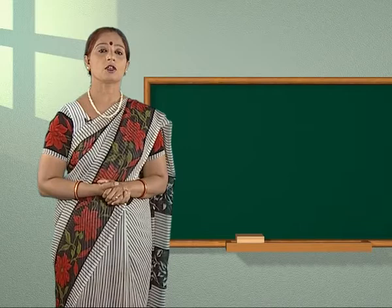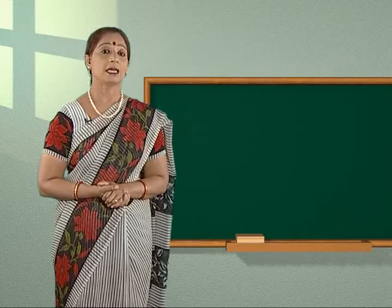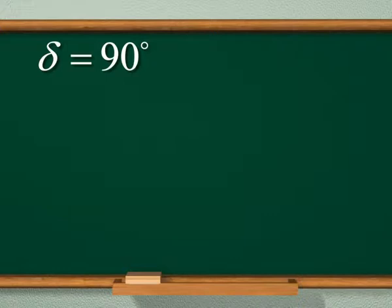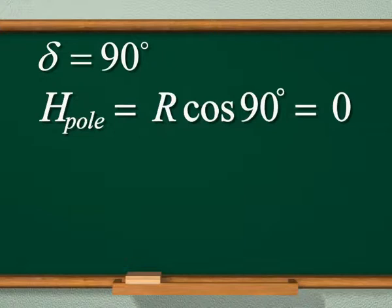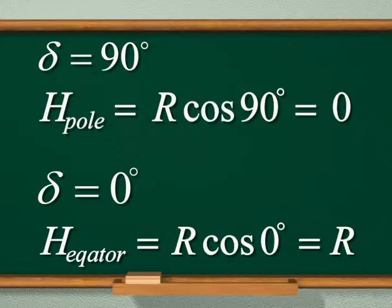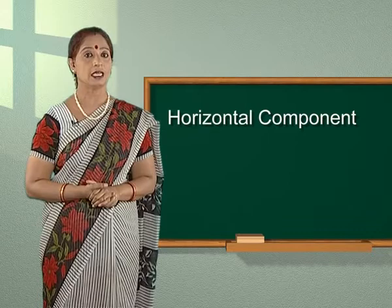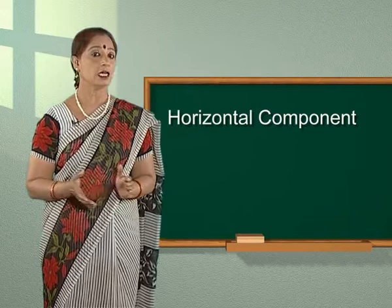The value of horizontal component H is different at different places. At the magnetic poles, the value of delta equals 90 degrees; hence the value of H is 0. On the other hand, at the equator, the value of delta equals 0 degrees; hence the value of H is maximum and equal to R. We can measure the horizontal component H either using a vibration magnetometer or a deflection magnetometer.